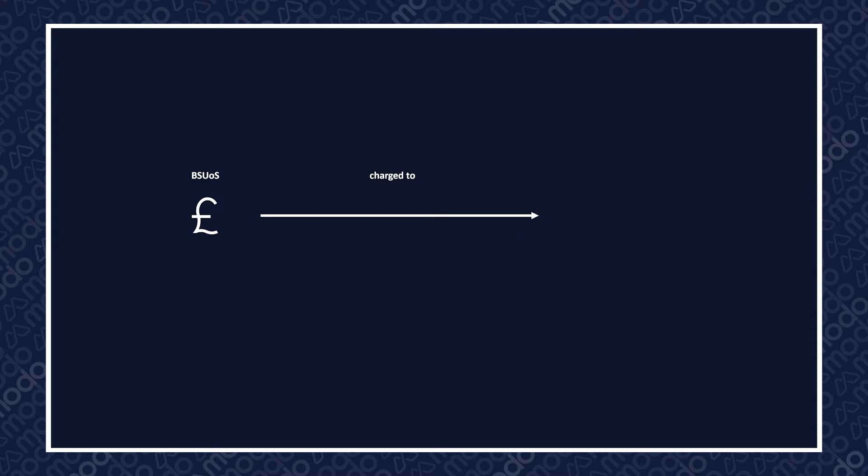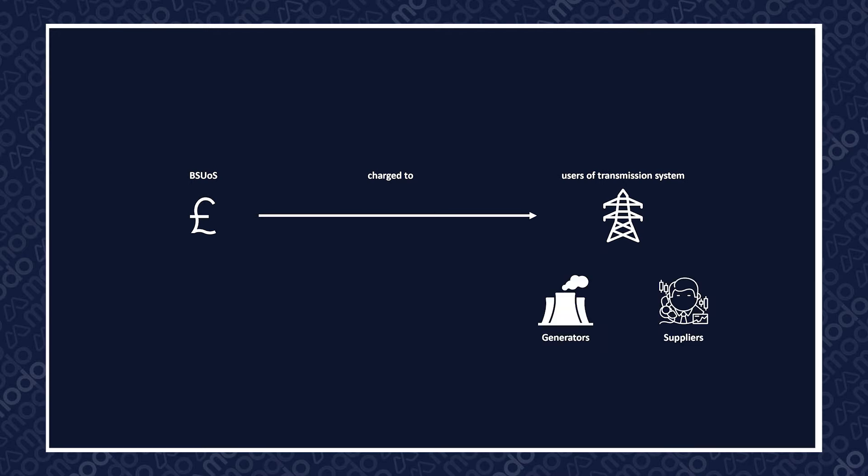BSUOS is charged to users of the transmission system, such as generators and suppliers, by the National Grid Electricity System Operator, or ESO. Its purpose is to recoup the costs of the day-to-day operations that take place to balance the system.